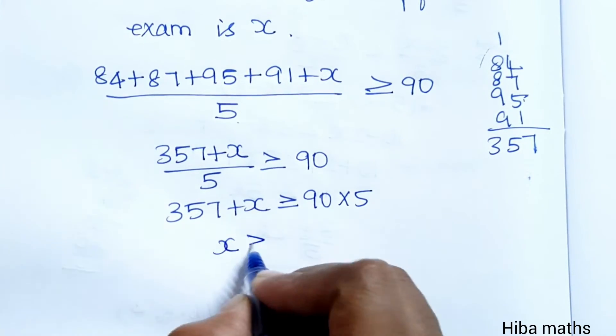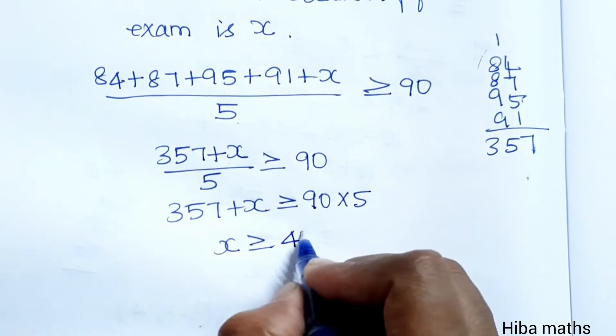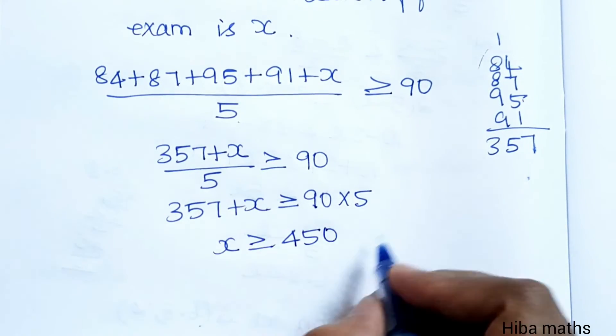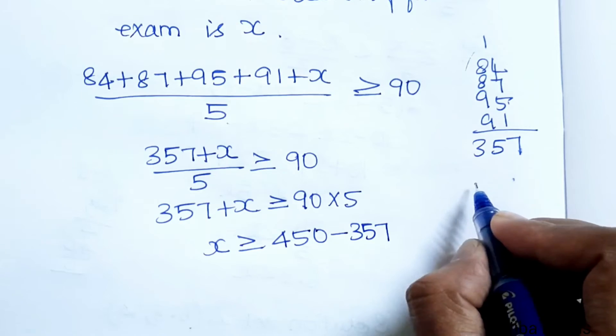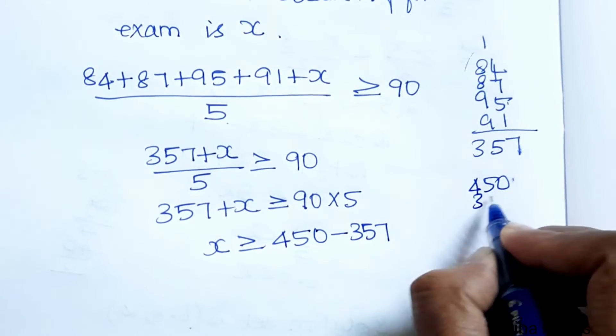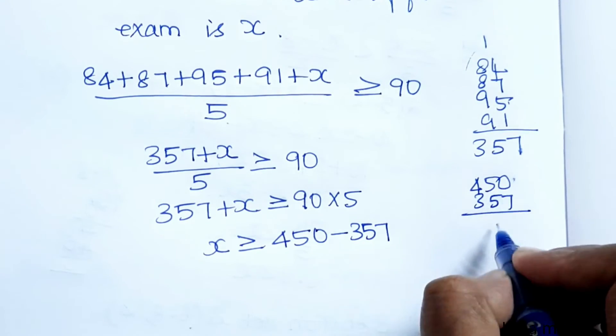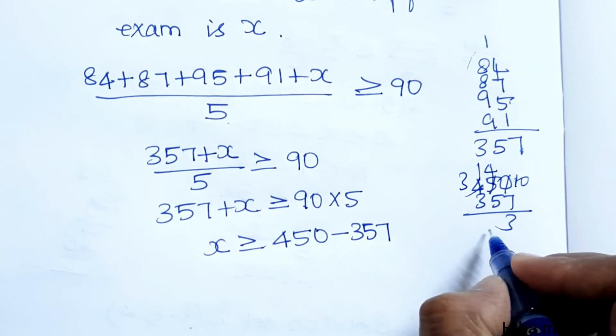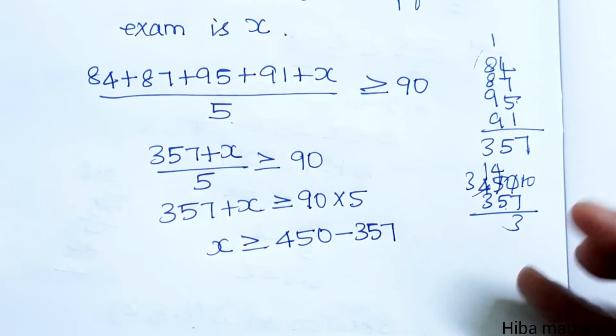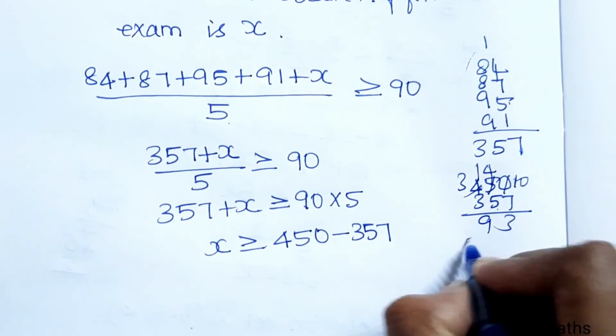Then, x is greater than or equal to 450 minus 357. So, 450 minus 357: 4, 10, 3, 14, 5, 6, 7, 8, 9, 10, 11, 12, 13, 14, equals 93.